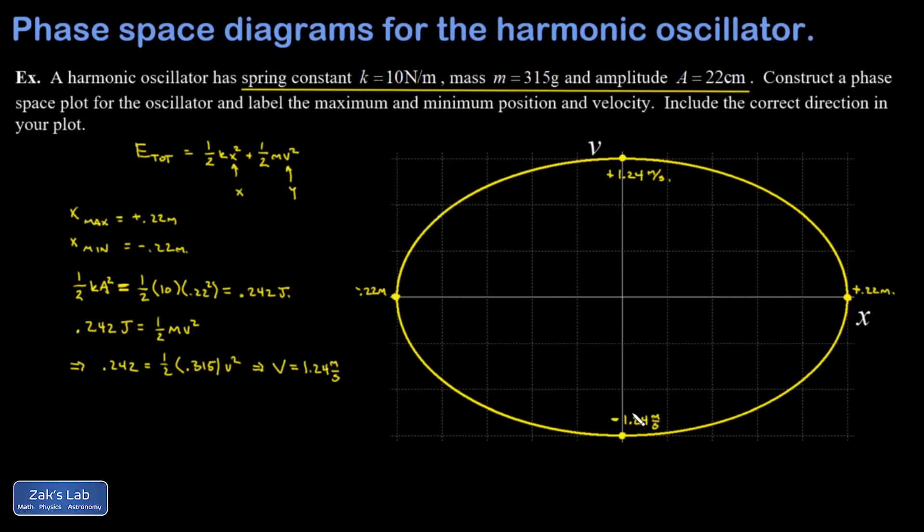The last thing we want to figure out about this phase-space plot is the directionality. We can figure out by looking at some of these four points which way the system is actually evolving. Let me look at this one first: maximum positive value of x. You release this thing from rest. Which way is it going to go? It's going to fly back towards the equilibrium position, which means velocities immediately become negative. So it looks like we're tracking this way.